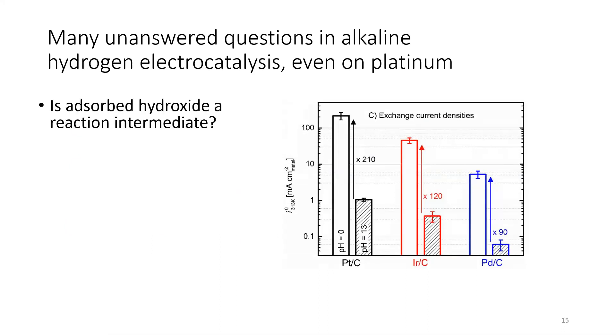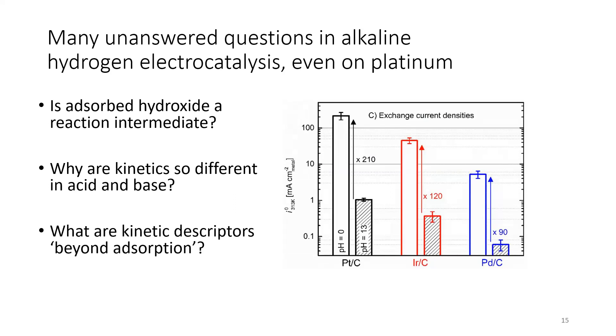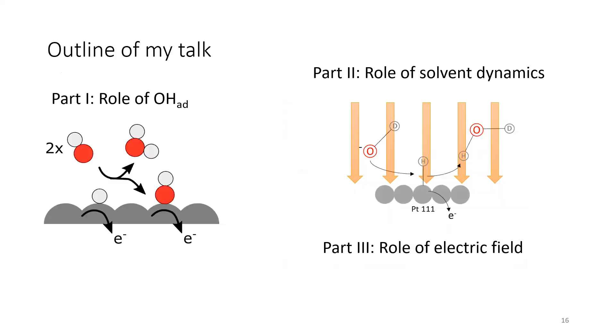Is adsorbed hydroxide a reaction intermediate? Why are the kinetics so different in acid and base? And the way that my talk title alludes to, what can we do to describe kinetics that are beyond adsorption? We know adsorption energy, but that's not enough. We're looking for something that can help us predict rates beyond that. So these are some of the questions we're going to try to answer, and there are three parts to my talk. The first is I'm going to talk about adsorbed hydroxide to see if it really is an intermediate or if it's a spectator. The second part, we'll be looking at the role of solvent dynamics, and then trying to narrow in on that, what do electric fields do?